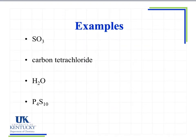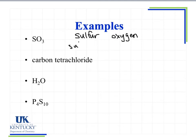Let's look at some examples. We have SO3. I see I have sulfur and oxygen. I have one sulfur, so the prefix would be mono, but it's the first element, so I omit that and just say sulfur. Then I look at my oxygen — I have three oxygens, so I use the prefix 'tri' to represent three, and I change the ending on oxygen to -ide. So I get sulfur trioxide. I only omit mono when it's in front of the first element; I always put a prefix with the second element regardless of the number.